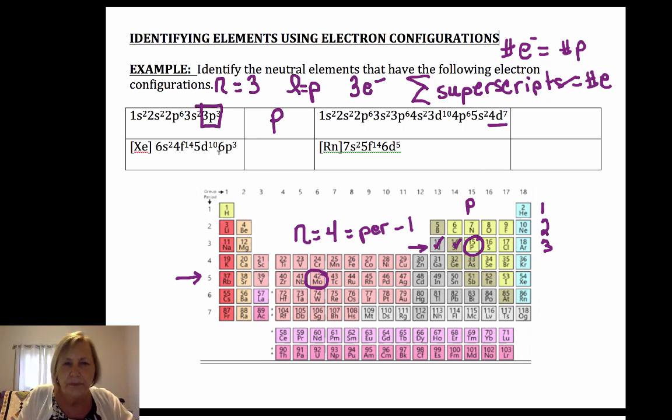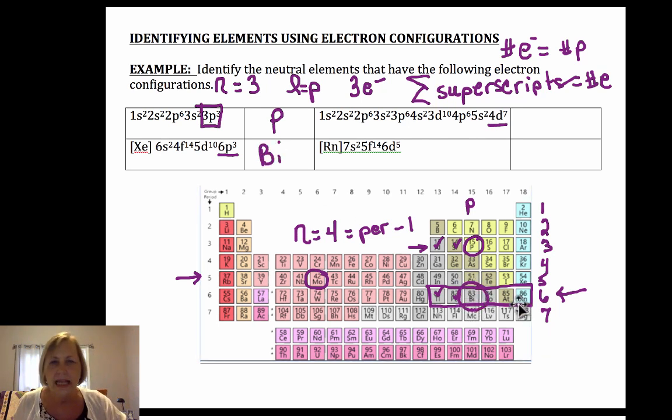Let's look here. This one ends in 6p3. So I'm in the p block and p block n is equal to the period. So I know that I'm in the p block, n is 6, so it's period 6. And I go three elements in. 1, 2, 3, I'm at bismuth.